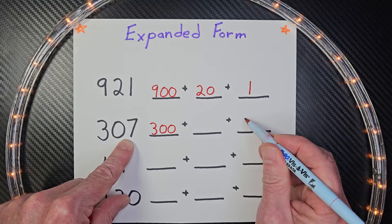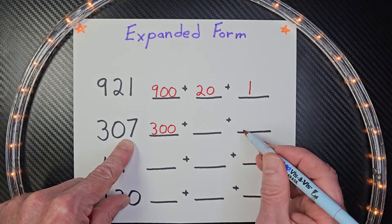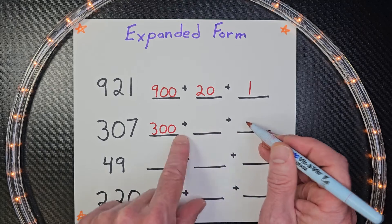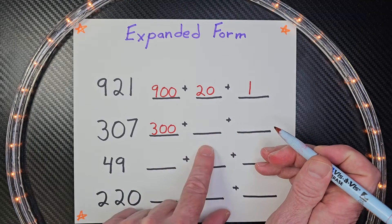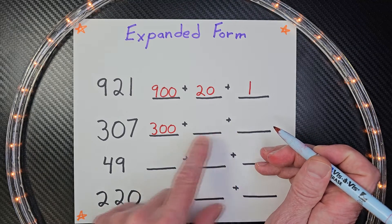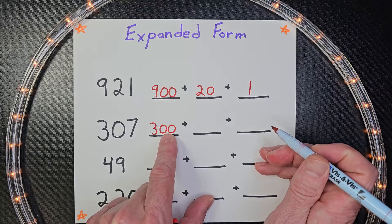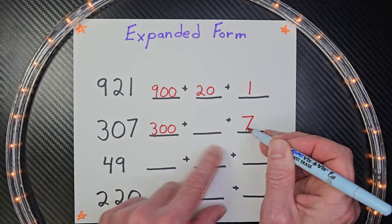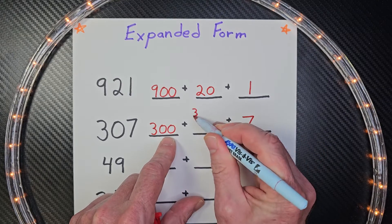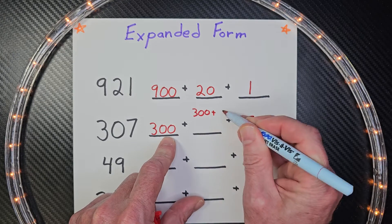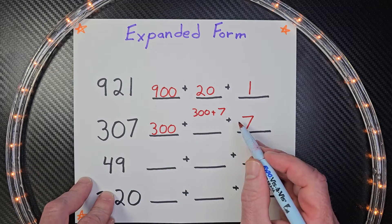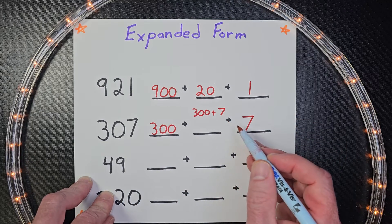I would get in the habit of just putting it right here if you do have blanks. If not, you can just put the 7 right there. So if you do have blanks set up on your paper, you can put the 7 here. Otherwise, if you don't, you can just write it as 300 plus 7. So I'm going to put a 7 right here. For example, I could have just put 300 plus 7. That is in its expanded form.